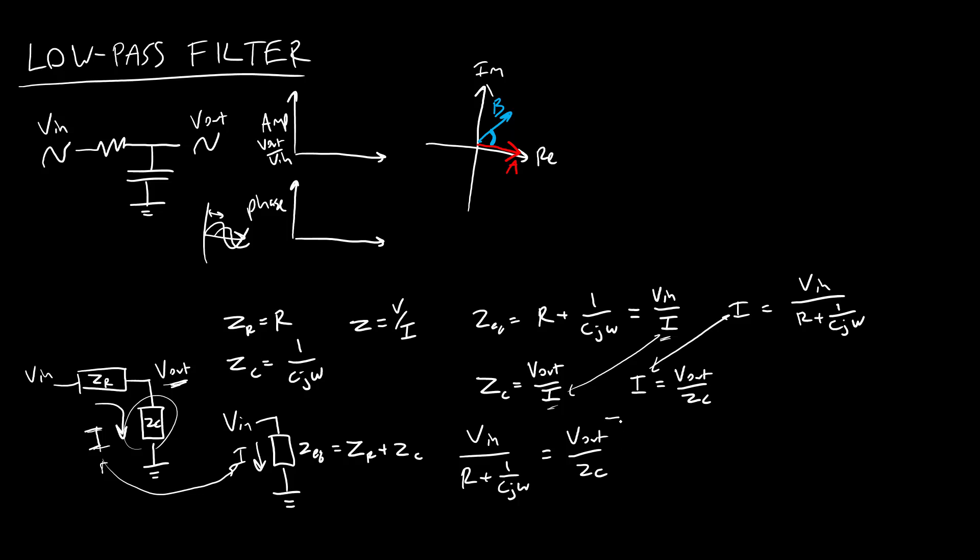Now rearranging things a little bit, because I want Vout as a function of the other stuff. So I have Vout equals Zc, which is 1 over Cj omega, all over R plus 1 over Cj omega times Vin. That fraction is a little messy. So I'm going to multiply that whole thing times Cj omega over Cj omega, you can always multiply something by one.